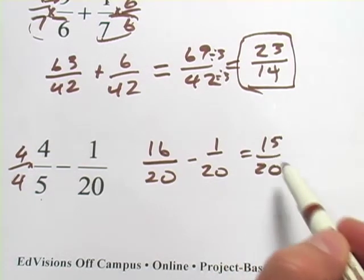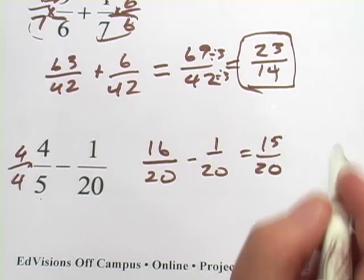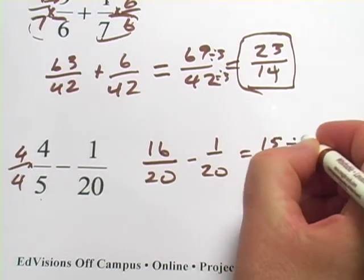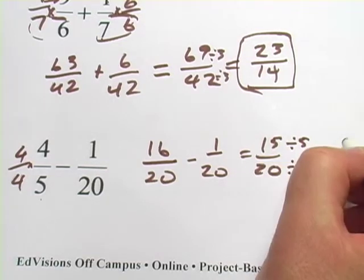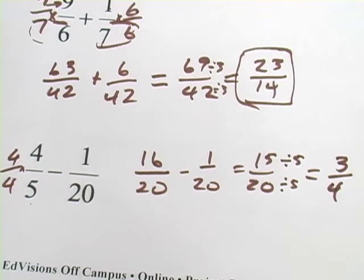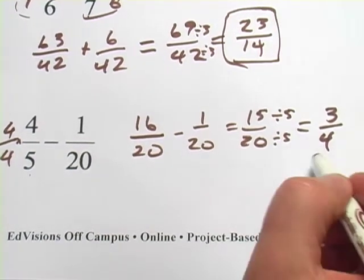And can we divide the top and the bottom by some factor they have in common? In this case, yes. I think they're both divisible by 5. So we're going to divide both of those by 5. And we get 15 divided by 5 is 3. 20 divided by 5 is 4. And at that point I think I can stop because I can't find any common factors between 3 and 4.